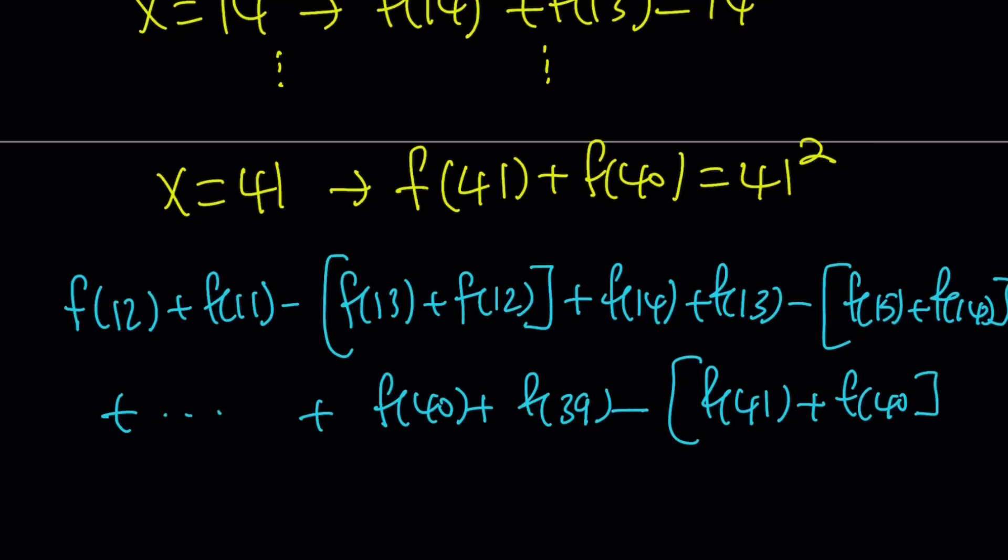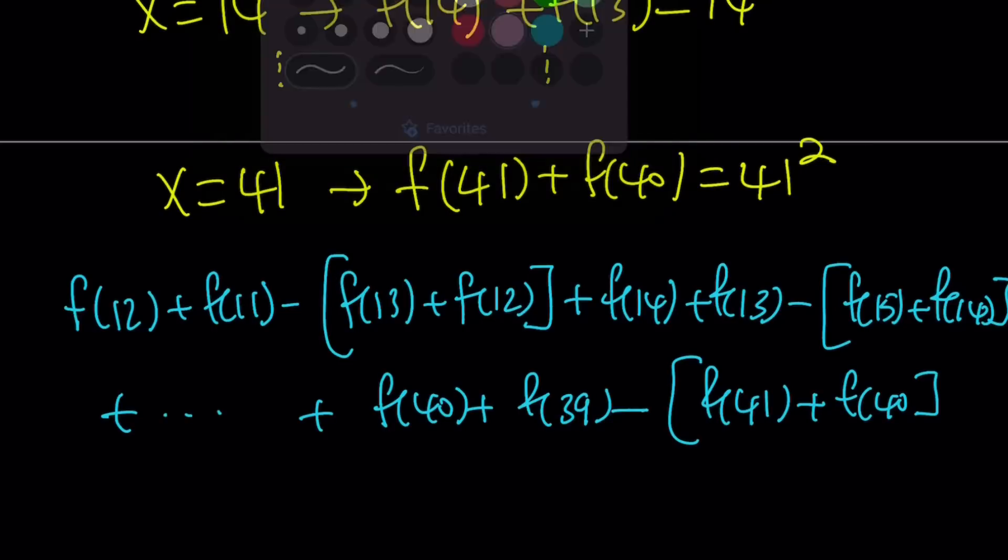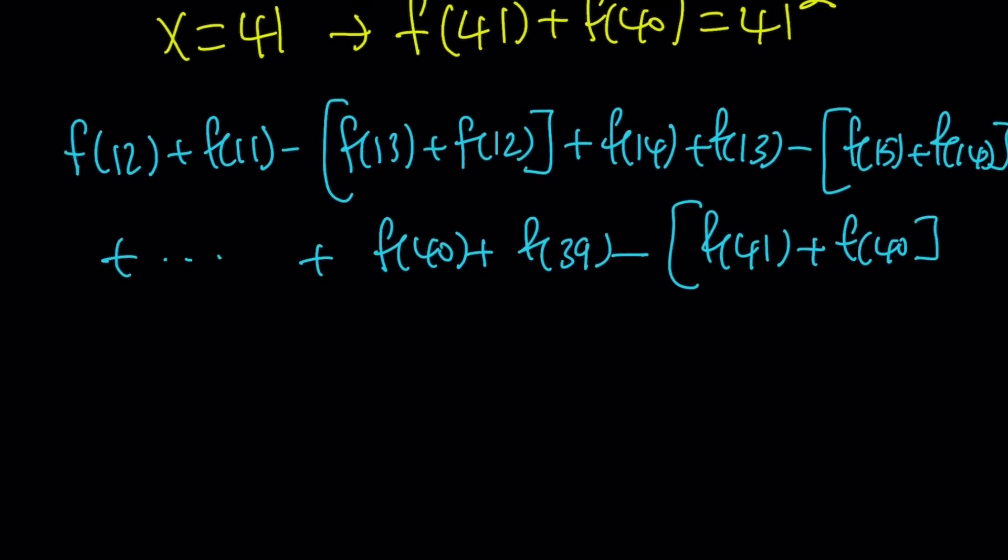Now notice what happens when I find this alternating sum. This is going to give me something that I'm looking for. f of 12 is going to cancel out. f of 13 is going to cancel out. f of 14 is going to cancel out. f of 40 is going to cancel out. And of course, f of 39 comes before that. So that's also going to cancel out. The only two terms that are left are going to be f of 11 and f of 41. So this alternating sum is going to equal f of 11 minus f of 41.